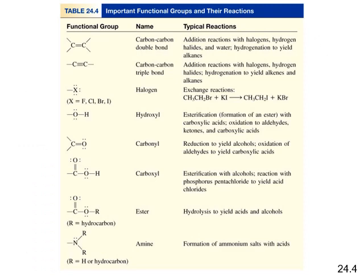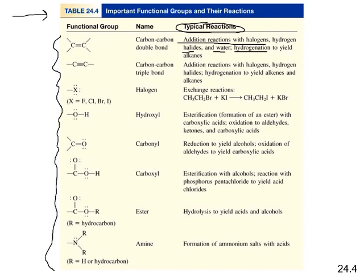This textbook table gives a quick overview of functional groups and their typical reactions. For alkenes, the functional group is the C=C double bond; typical reactions include addition with halogens, hydrogen halides, water (hydration), and hydrogenation to yield alkanes. The table provides similar information for all the other functional groups, which is helpful when working on your assignment.